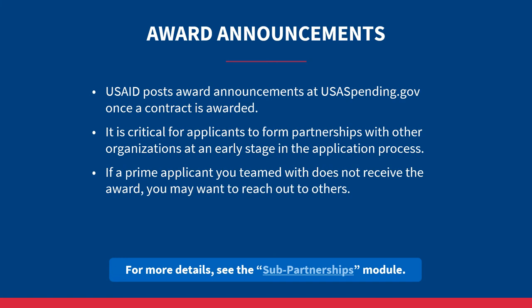USAID posts award announcements at USAspending.gov once an acquisition award is issued to a contractor. You can also visit USAspending.gov to find out which organizations are recipients of assistance awards. It is critical for applicants to form partnerships with other organizations at an early stage in the application process. If a prime applicant you teamed with does not receive the award, you may want to reach out to others listed in award announcements to explore future sub-award opportunities. For more details, view the Forming Sub-Award Partnerships module.